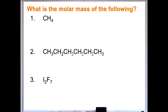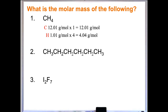That's really all there is to it. Give these three practice problems a try. For the first one, methane has one carbon and four hydrogens. The molar mass of carbon is 12.01 grams per mole times one, and 1.01 times four gives us 4.04. Total those together and you get 16.05 grams per mole.